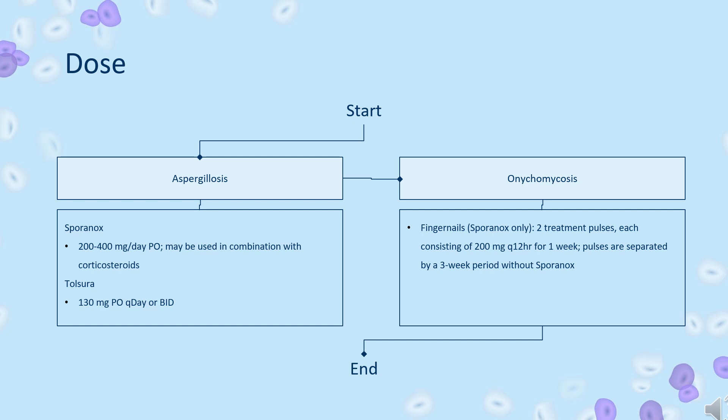Tolsura: 130 mg PO once daily or twice daily. Onychomycosis: Indicated for treatment of onychomycosis of the toenail due to Trichophyton rubrum or T. mentagrophytes in non-immunocompromised patients. Nails — Sporanox only: 2 treatment pulses, each consisting of 200 mg every 12 hours for 1 week; pulses are separated by a 3-week period without Sporanox. Toenails with or without fingernail involvement — Sporanox: 200 mg per day orally for 12 weeks.